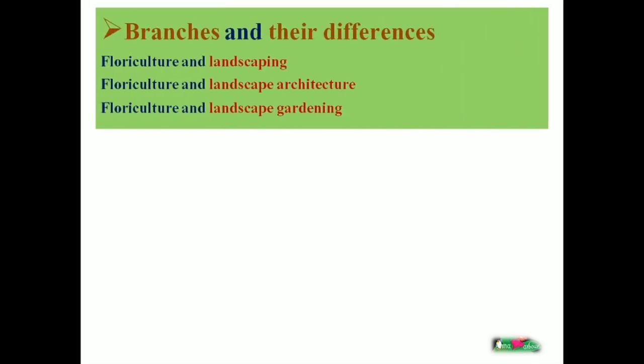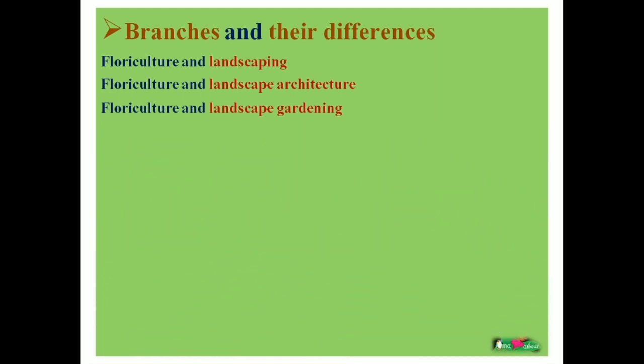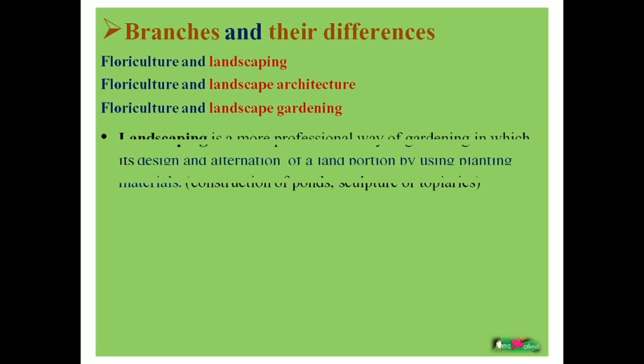Next, what are the branches? There are three important branches: first, floriculture and landscaping; second, floriculture and landscape architecture; and last, floriculture and landscape gardening. We should know the difference between landscaping, landscape architecture, and landscape gardening. Landscaping is a broad and general term, and landscape architecture and landscape gardening come under landscaping.